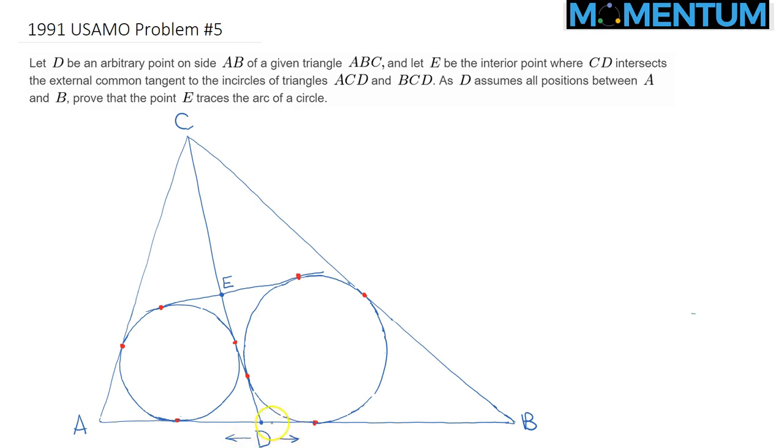D is a variable point, so I can move it along AB. The point E is defined as the intersection of CD, this Cevian CD, and this common external tangent. Let's label these two tangency points as R and S. So it's just the intersection of CD and RS.